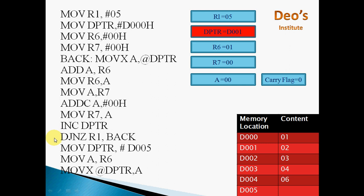Next instruction DJNZ — decrement and jump if not zero — R1, back. This means decrement R1 by 1. R1 is decremented by 1, and since R1 is not 0, we jump to 'back', which is the instruction labeled as 'back'. So you have to give the address of the instruction labeled as back, and control will jump there.